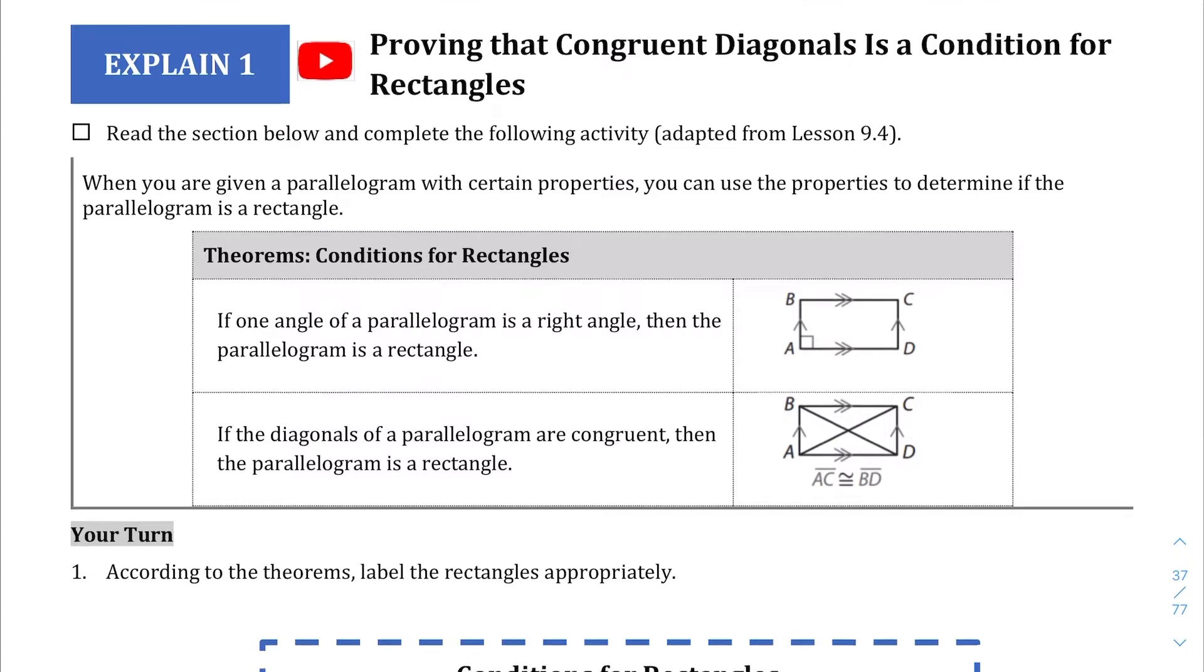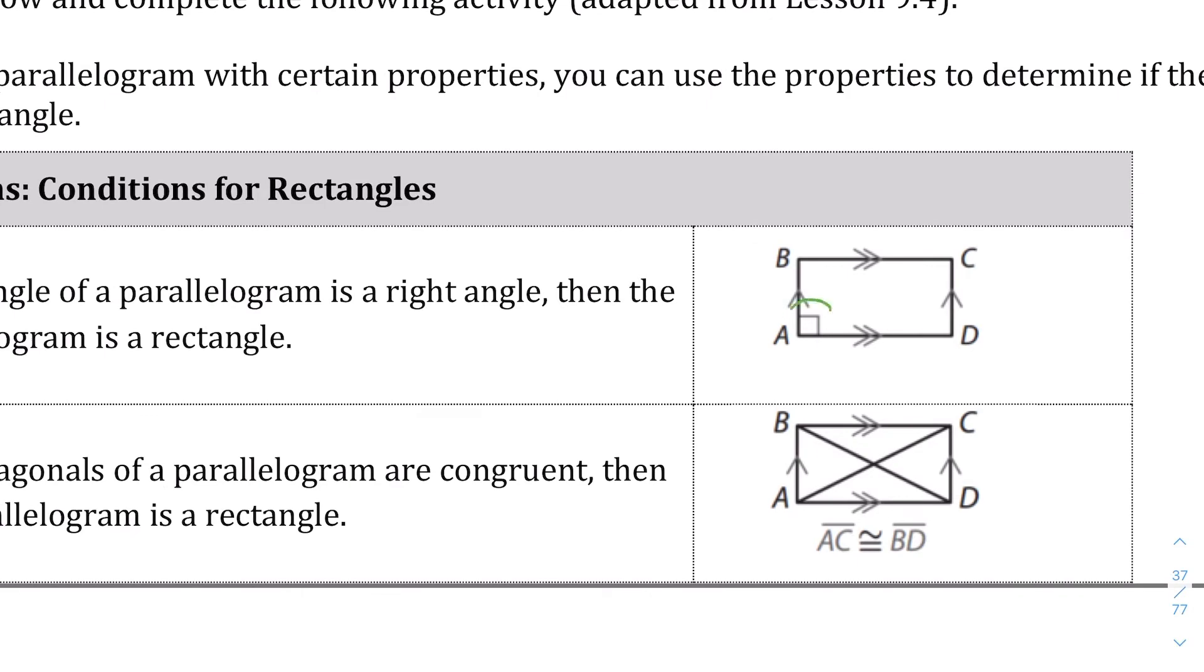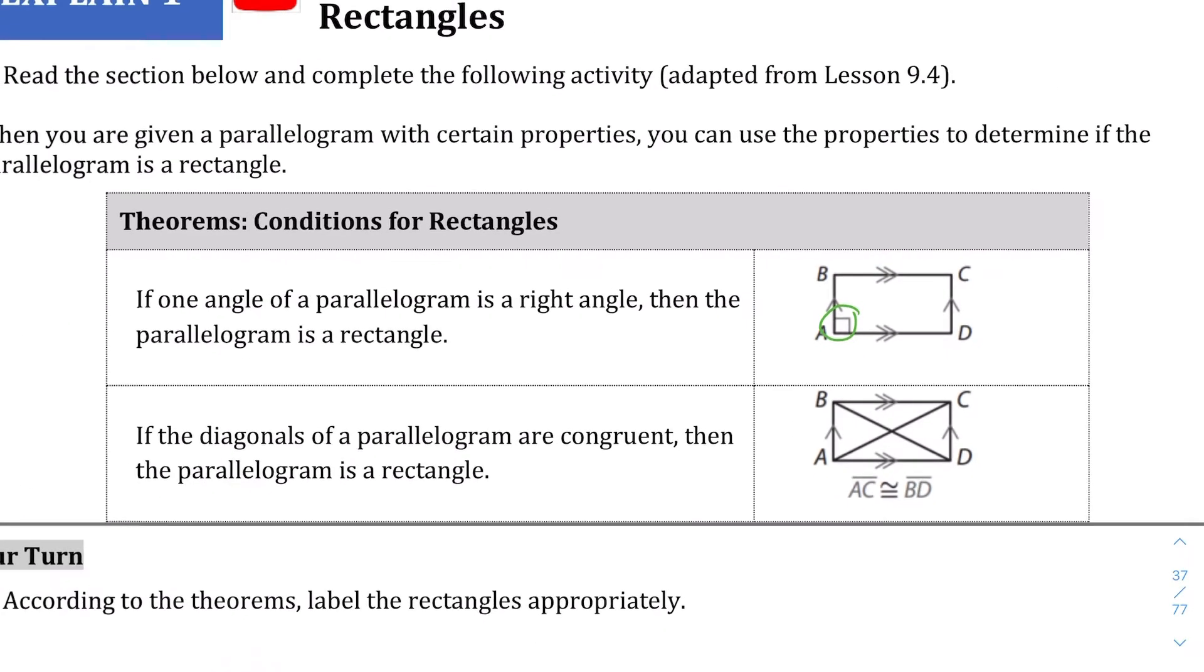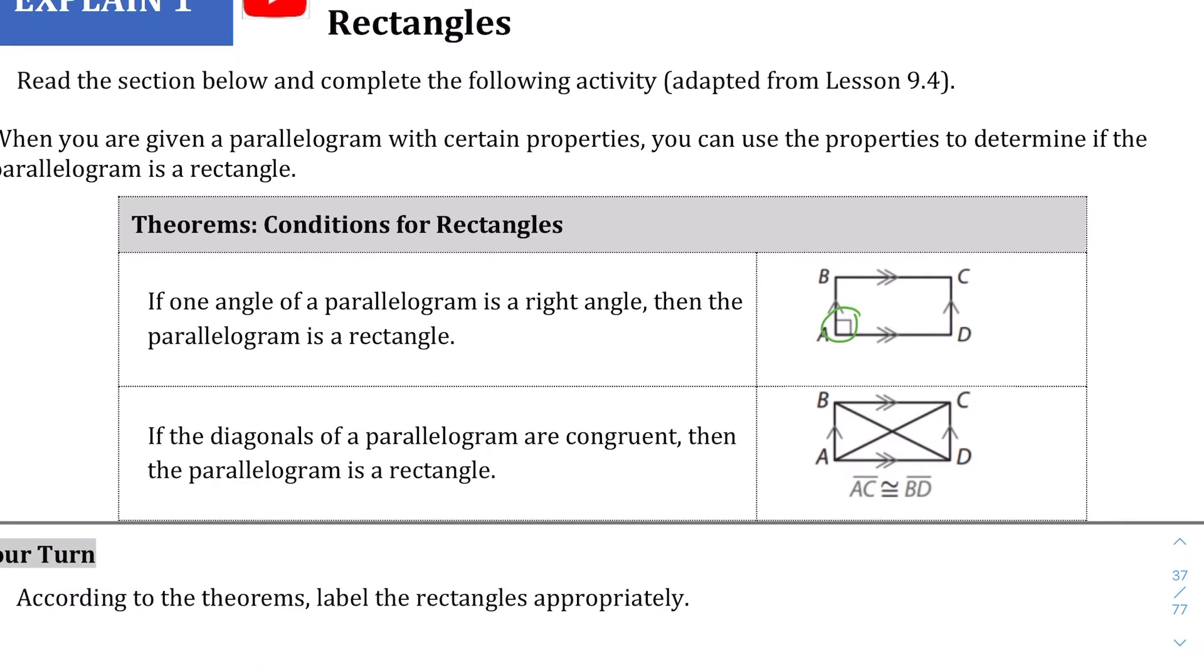The first one says that if you have a parallelogram and one of the angles is a right angle, then you can assume that this is a rectangle. So that's interesting because if you have one of the corners being a right angle, then you're going to assume that all these are going to end up being right angles as well.